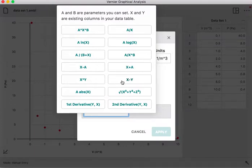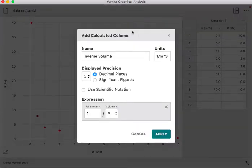So we want to take 1 divided by our volumes, so we'll click A over X. Our parameter is 1. You can reset that if you need to, but 1 is what we want. And we don't want pressure, we want 1 over volume. So we'll click on that.